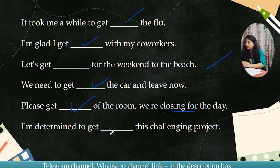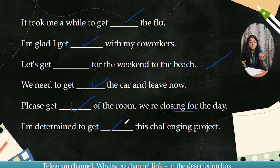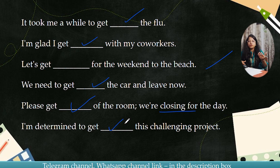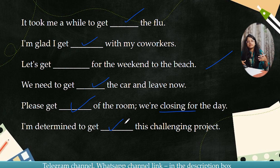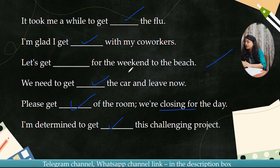I am determined to get [blank] this challenging project. I want to successfully achieve it. So the answer is going to be get through — I am determined to get through this challenging project.